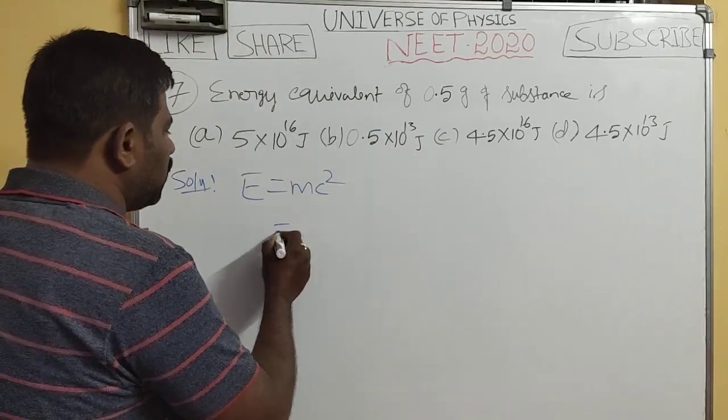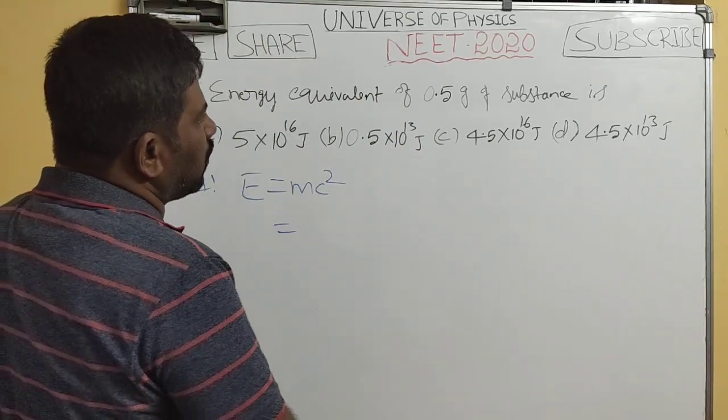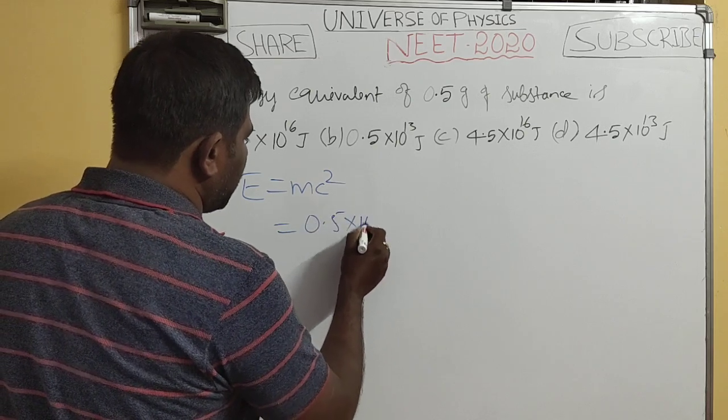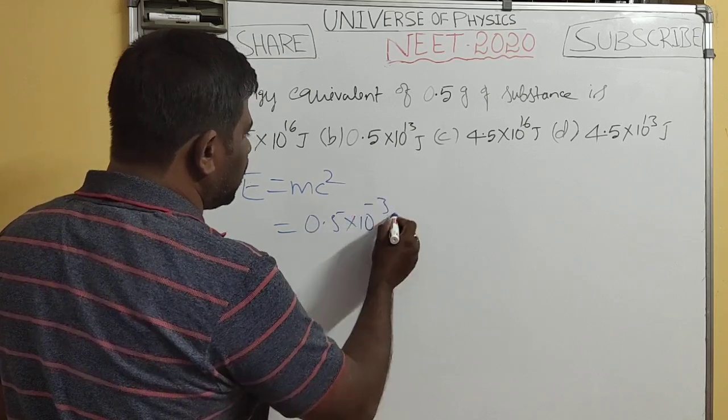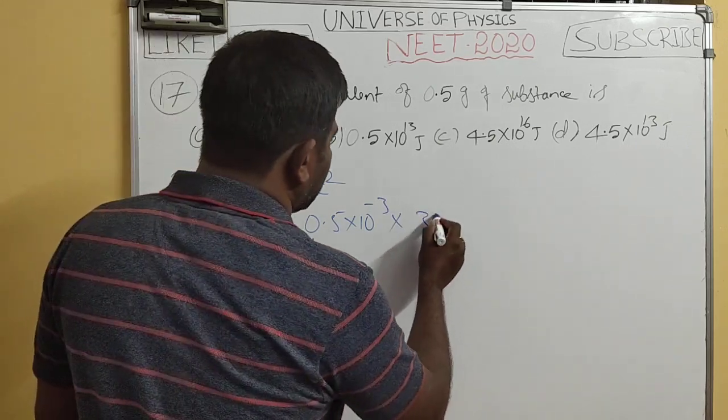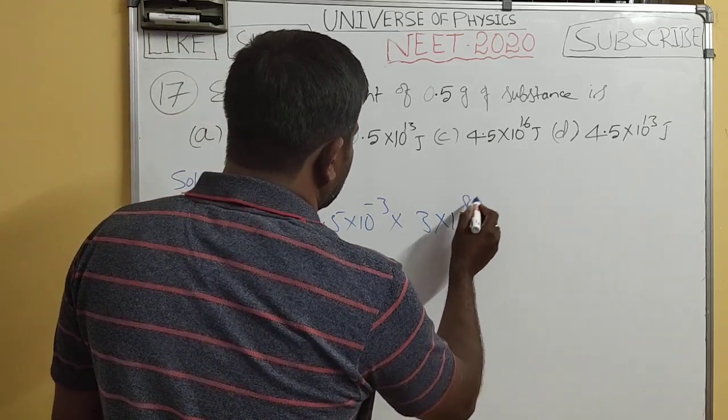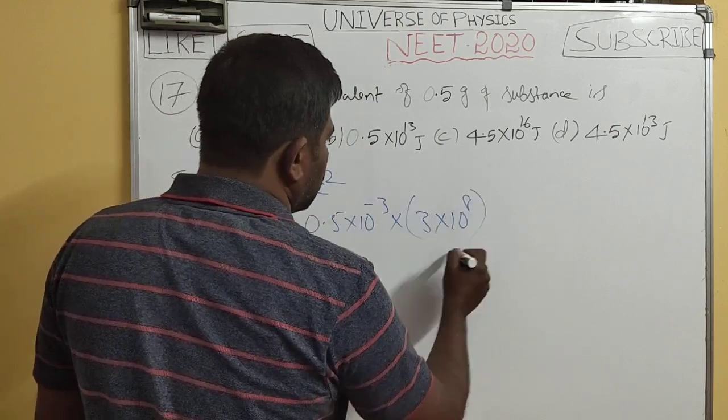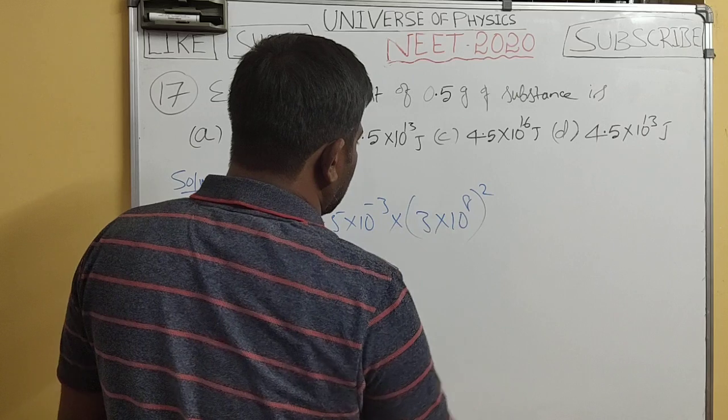The mass is 0.5 grams, which equals 0.5×10^-3 kilograms, multiplied by c, the speed of light, which is 3×10^8 meters per second, squared.